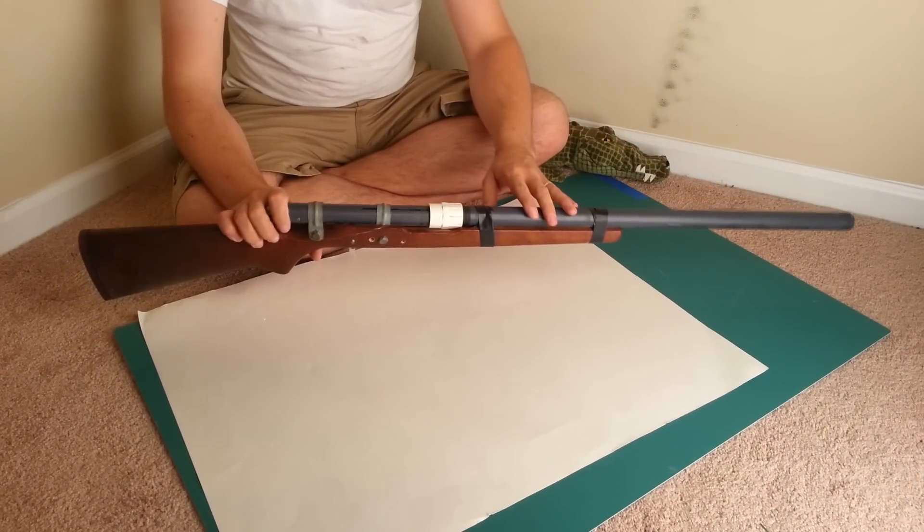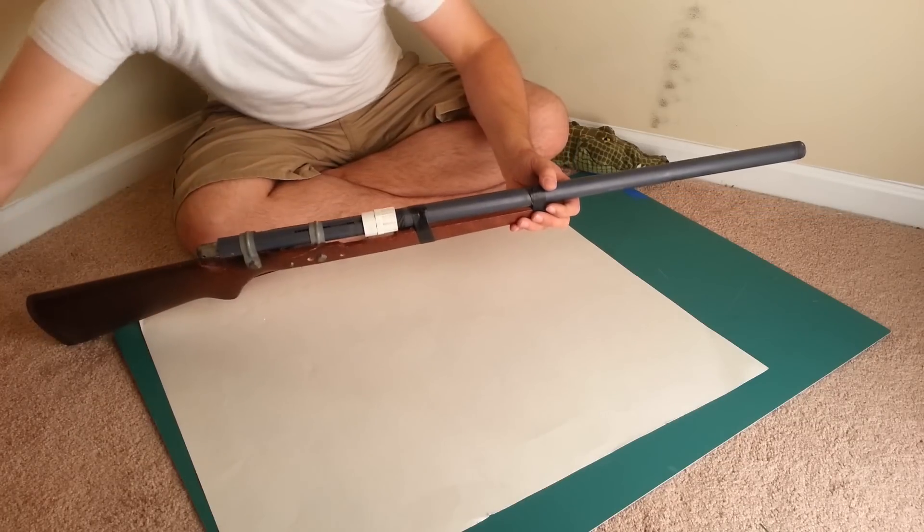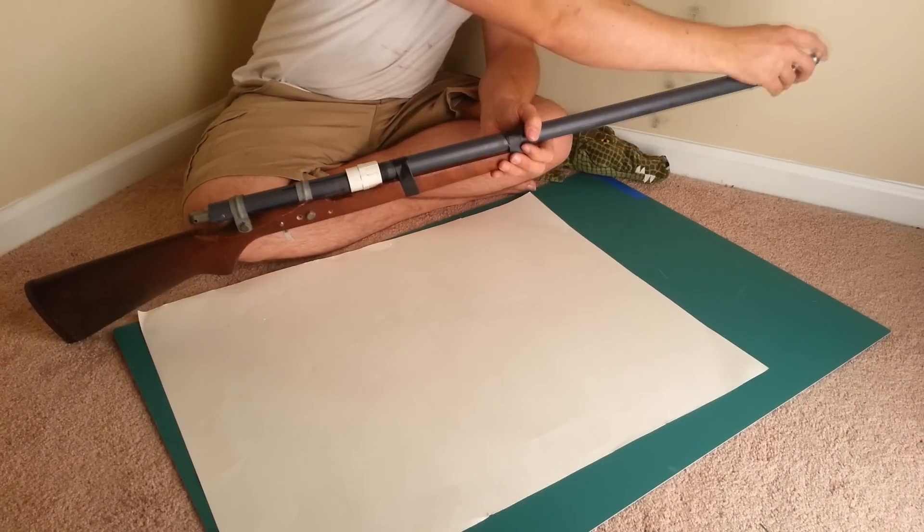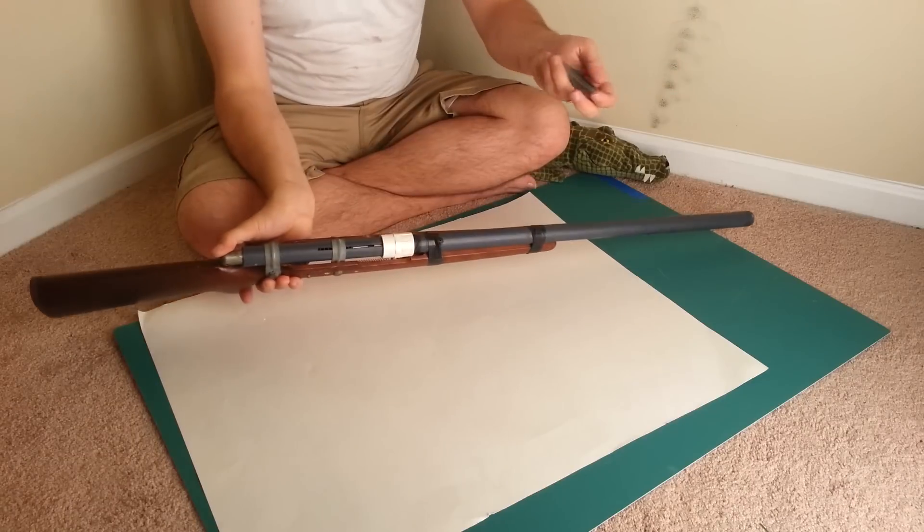This barrel is made out of PVC conduit pipe, and it happens to be just the right size for a standard 12 gram CO2 cartridge to fit in there. Right down the barrel. Pretty snug. This is a spent cartridge, by the way.